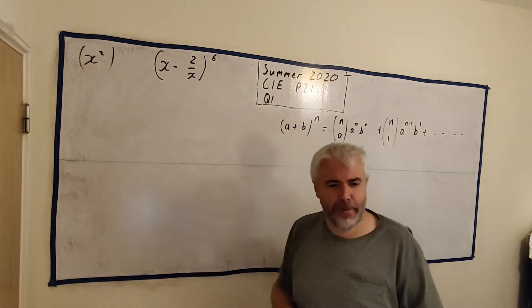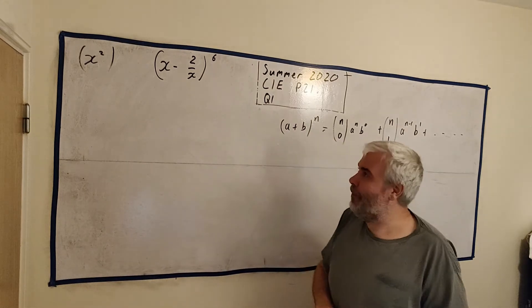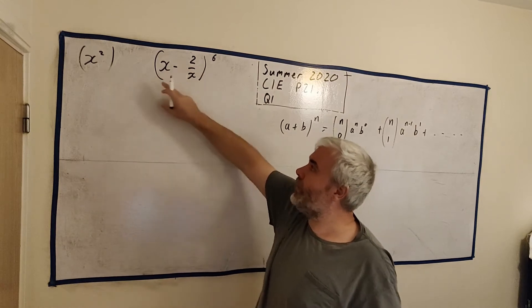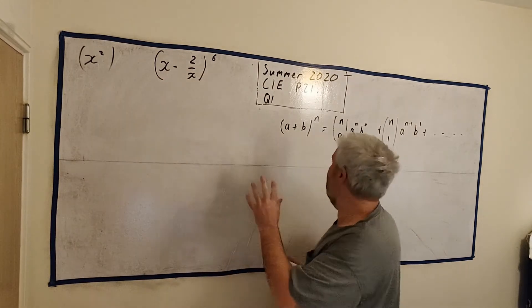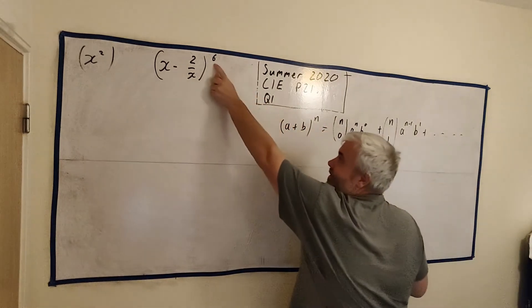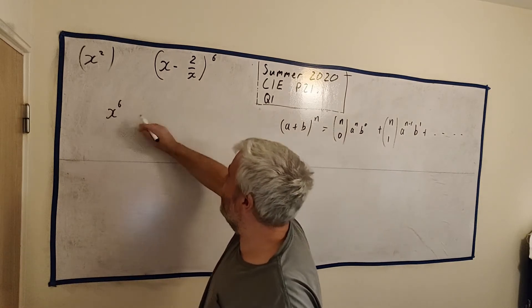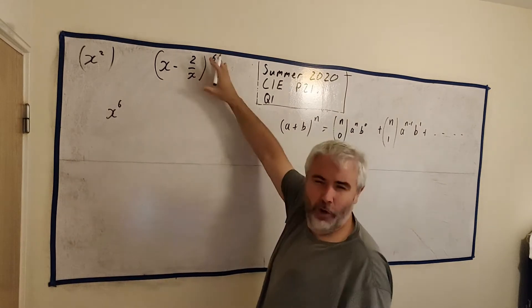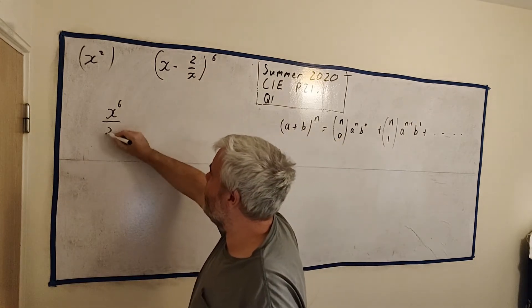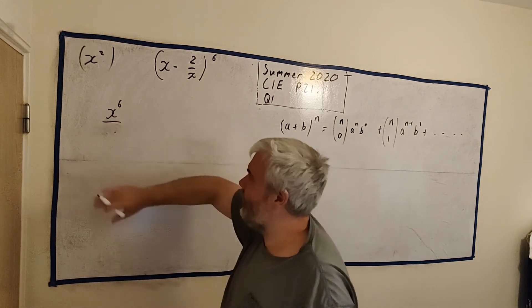So even if this number was 100, and they asked this same question, something that a student could not do in the space of an exam, we could still answer this. Now, they're never usually that mean, or maybe it is more mean to give something that's doable. So we have to just think to ourselves, which term will give x². And so let's think this through, because it's the first term to the power of n. In this case, n is 6. So let's write some of these out.